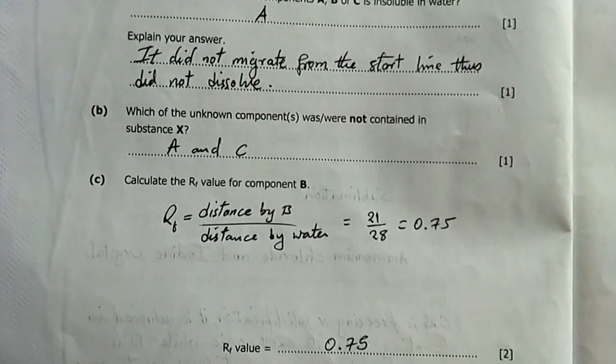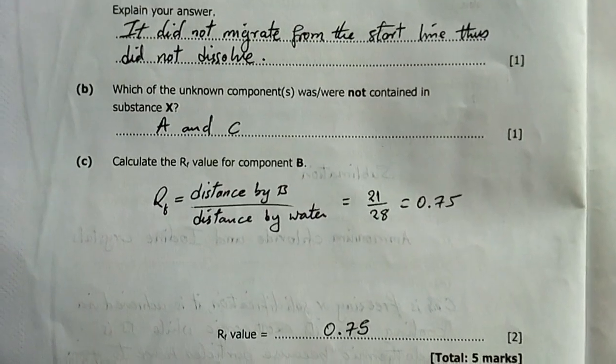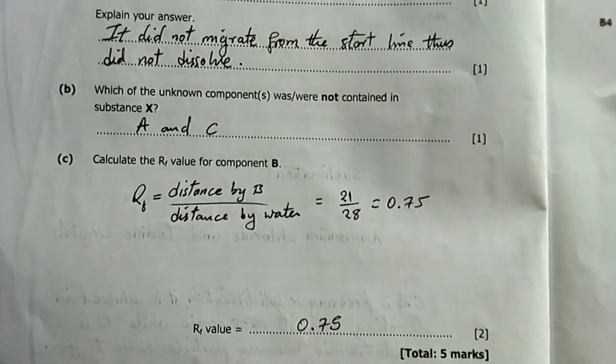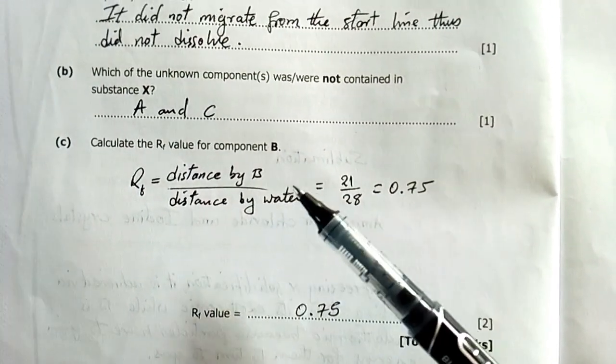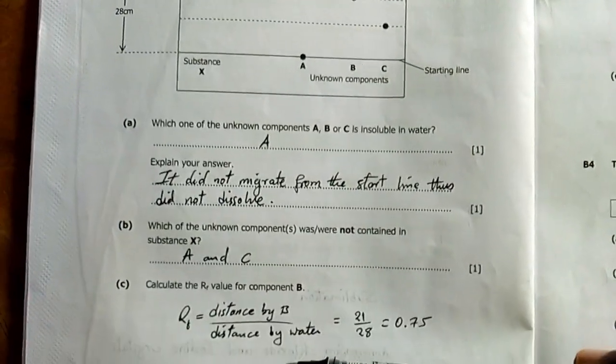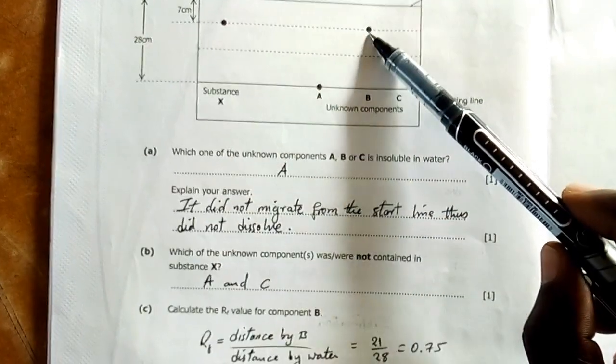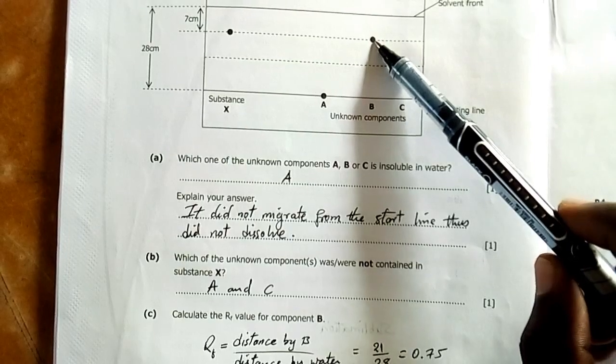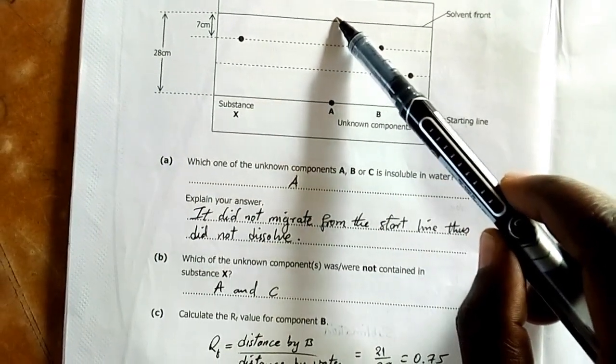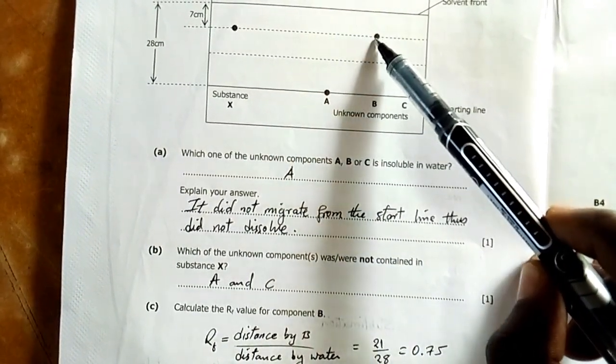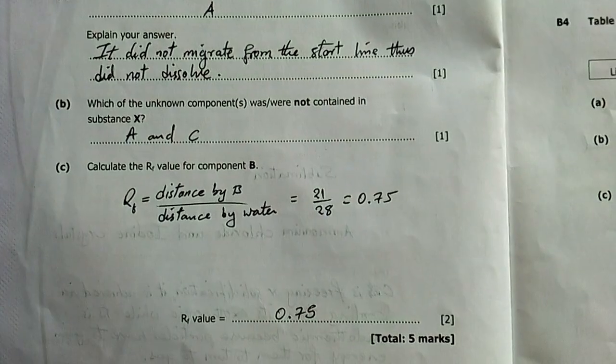Question C: Calculate the RF value for component B. RF value equals distance traveled by component over distance traveled by the solvent front. Distance traveled by B is 28 minus 7, which is 21 centimeters. So 21 over 28 gives 0.75. That's our retention factor. We scored all five marks.